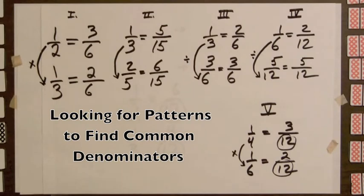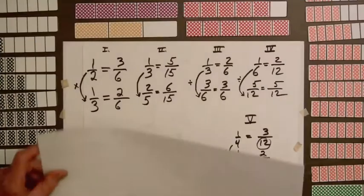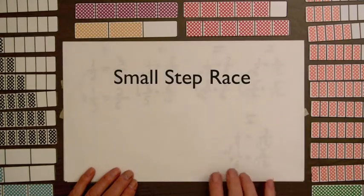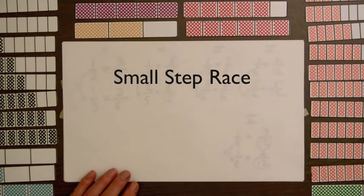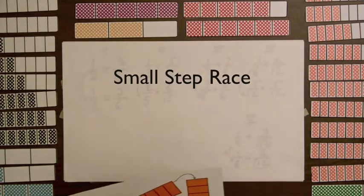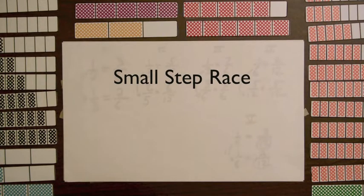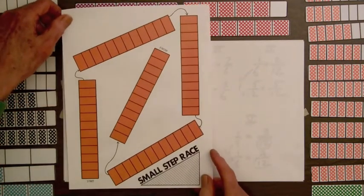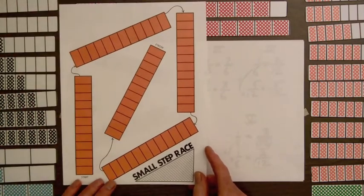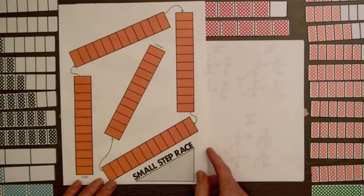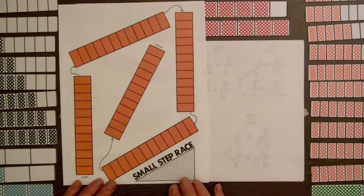The small step race mat is an activity in the fraction-based materials. It will help students become familiar with the common denominators of twelve, for halves, thirds, fourths, sixths, and twelfths. So we'll look at this race mat here, the small step race.